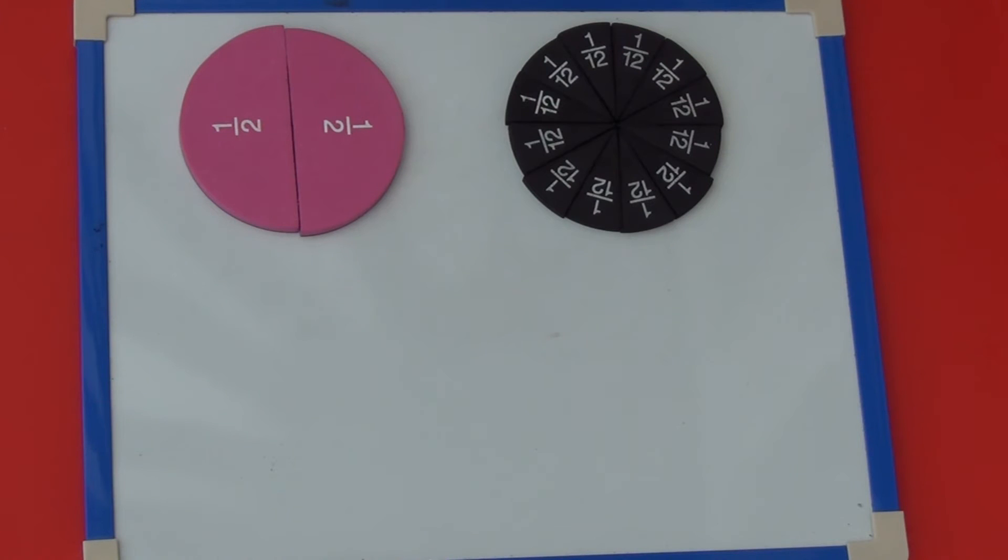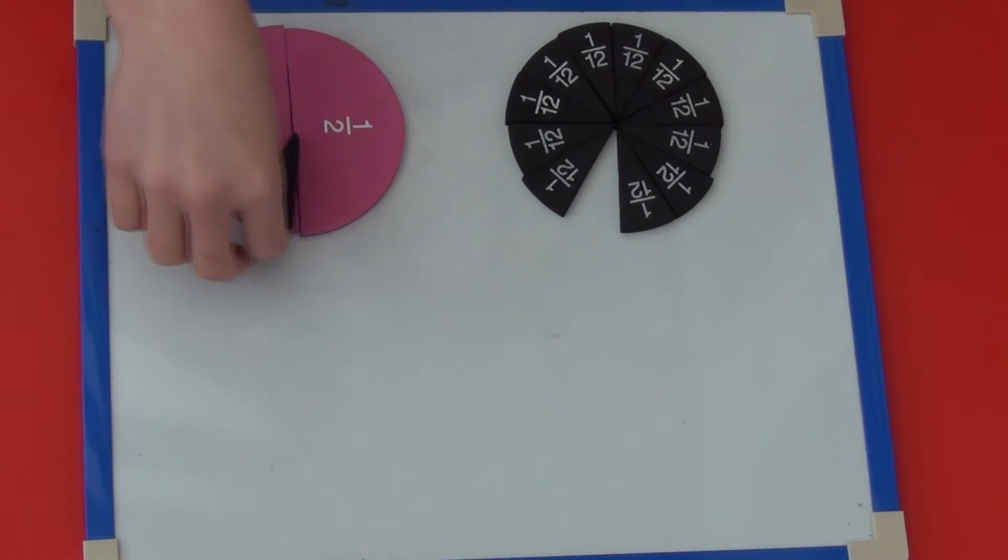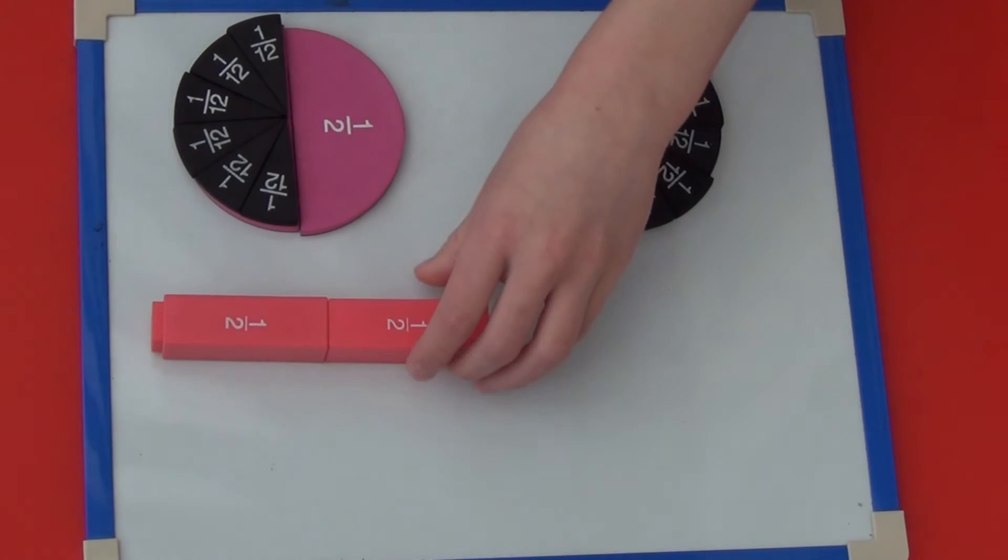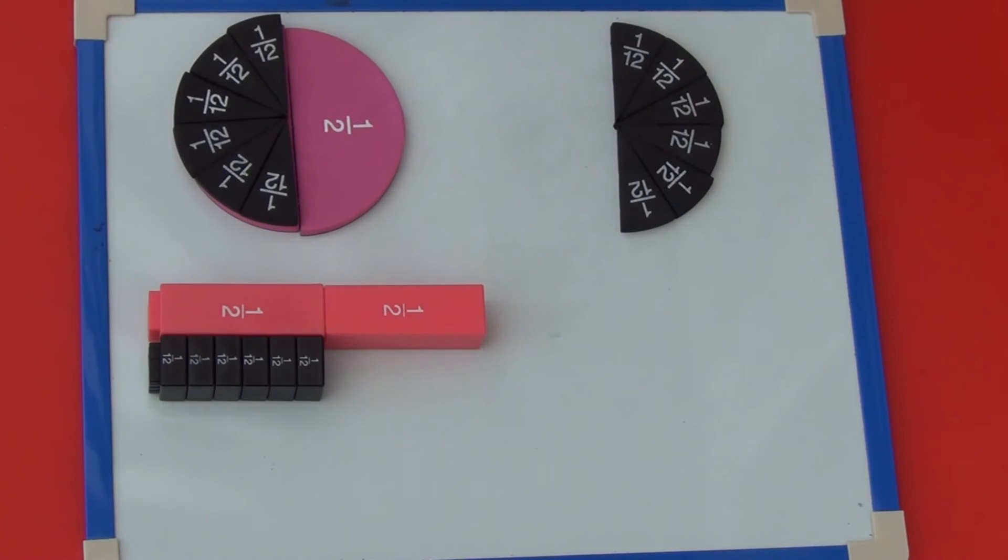For my third one we can see that one half is the same as six-twelfths. I can also show this with cubes. So six-twelfths is the same as one-half.